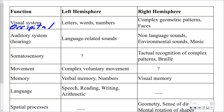The occipital lobe processes visual information. From either eye, information goes to both hemispheres. In the left hemisphere, if it is information showing letters, words, sentences, paragraphs, or numbers, it is directed to the left occipital lobe. In the right hemisphere, anything not related to words and numbers — complex geometric patterns and faces, such as a face of Albert Einstein — would be processed in the right occipital lobe.